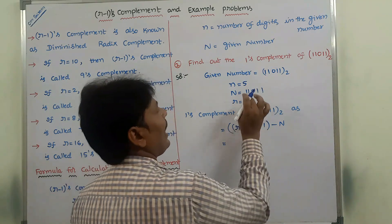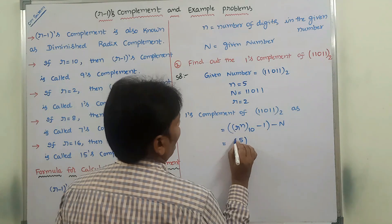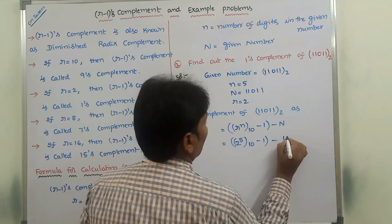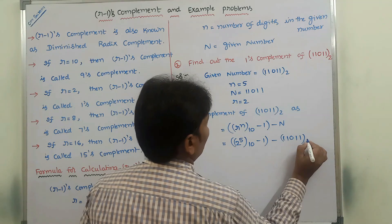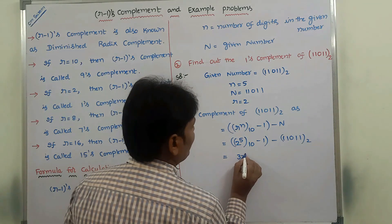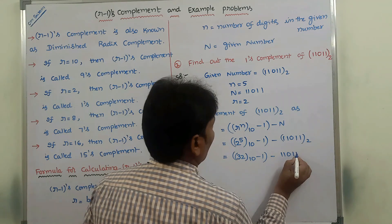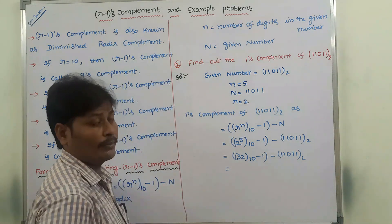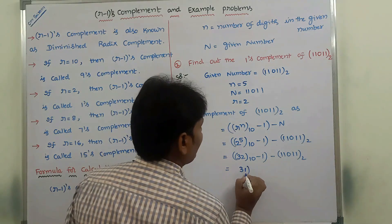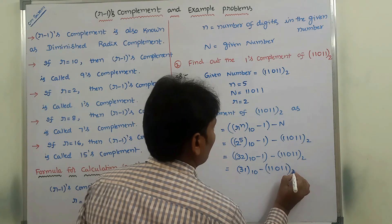The 1's complement of 11011 base 2 uses the formula R^n - 1 - N. R value is 2, small n value is 5. So: 2^5 base 10 minus 1, minus 11011 base 2. Now, 2^5 is 32 base 10, minus 1 is 31 base 10, minus 11011 base 2. We cannot directly perform subtraction between these two numbers because 31 has base 10 and 11011 has base 2.